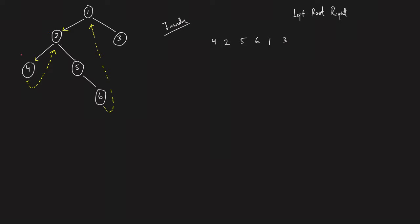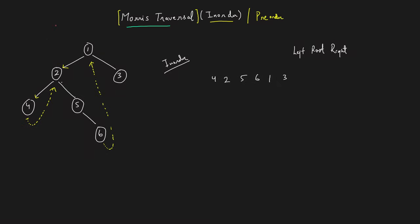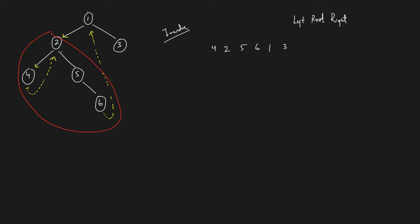The key observation is: on the left subtree, whichever is the last guy visited in inorder — for example four is the last node of its subtree — after that you go back to the root. Similarly, for the subtree rooted at two, the last node visited in inorder is six, and after completing the left subtree's inorder you go back to the root. The pattern is: from the last node of any left subtree, you go back to the root.